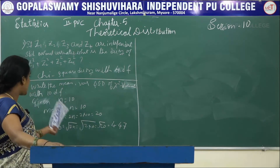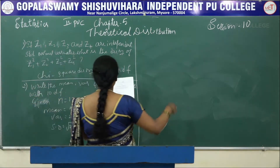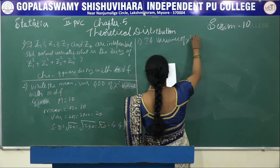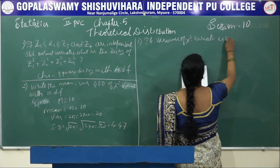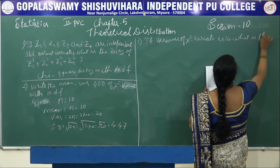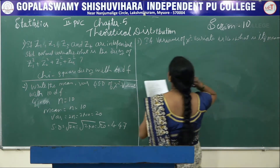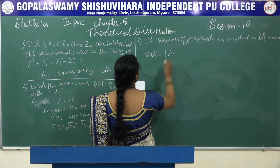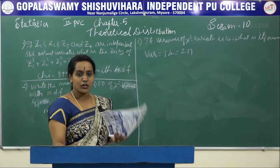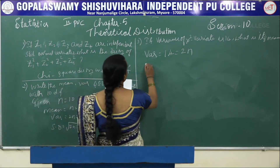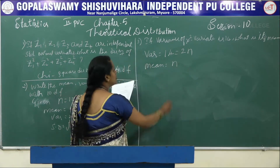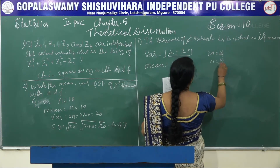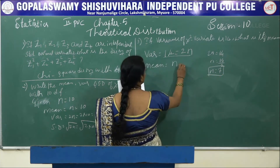Problem 3: If the variance of a chi-square variate is 14, what is its mean? Given variance = 14, and since variance = 2n, we have 2n = 14, so n = 7. Therefore, mean = n = 7.